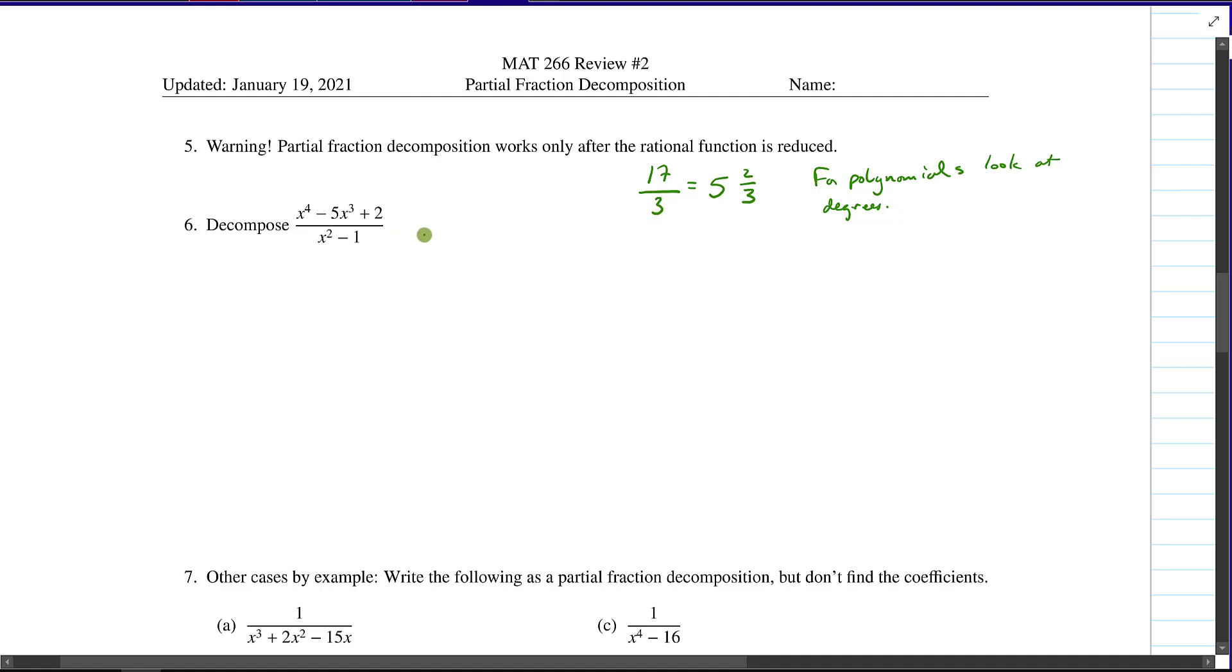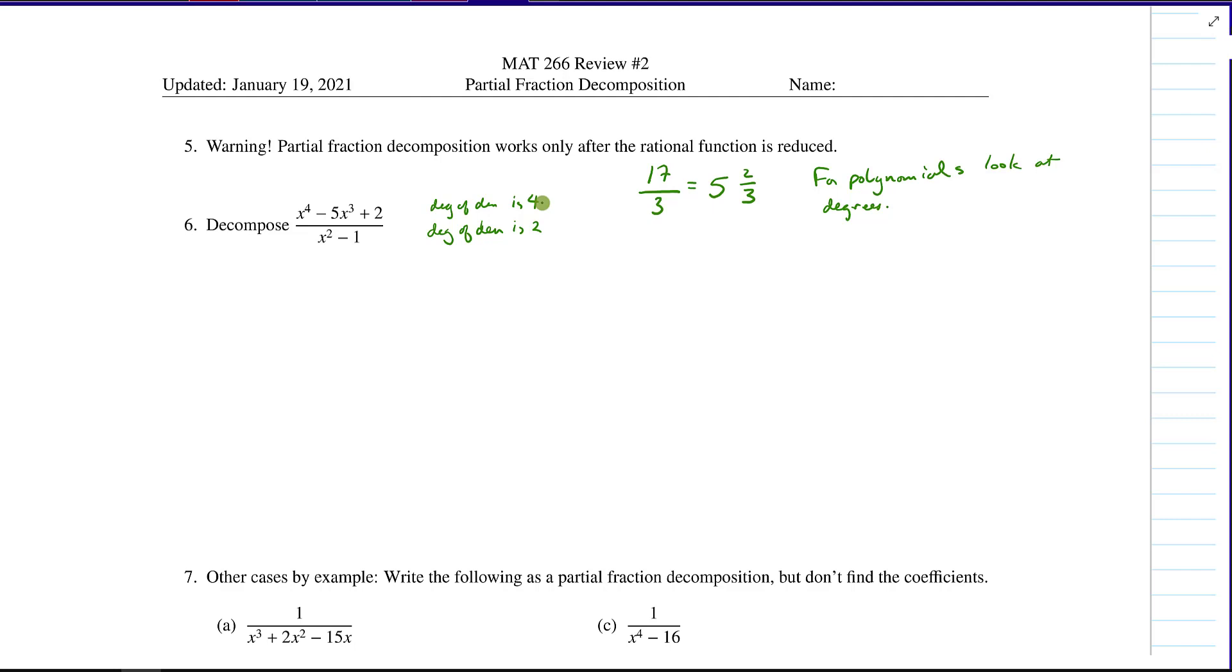Look at the degree of the denominator. The degree of the denominator is 2, and the degree of the numerator is 4. And we're not going to consider one of these reduced unless the degree of the numerator is less than the degree of the denominator.